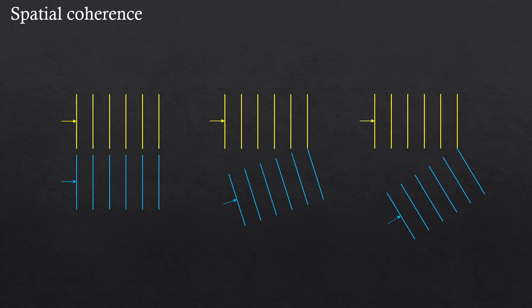Here I'm showing three different cases of two propagating light waves. The lines are the wavefronts of the beams. The left side represents when the two waves are spatially coherent, and as we move to the right, we can see that they become less spatially coherent.